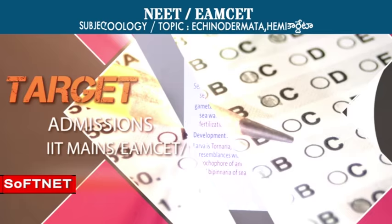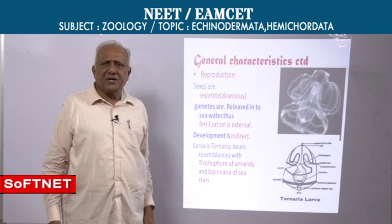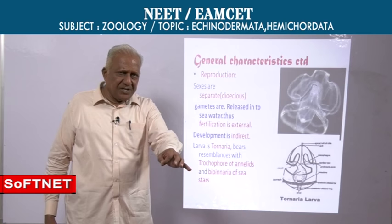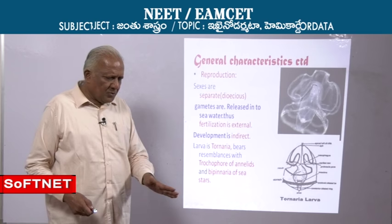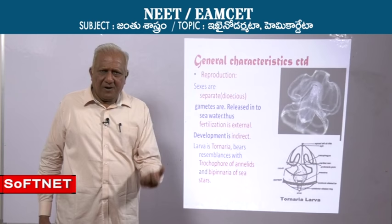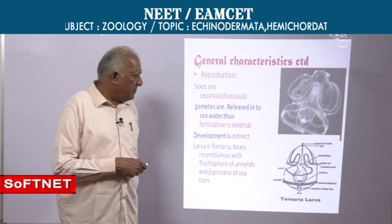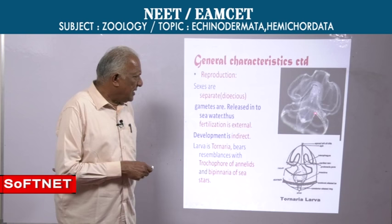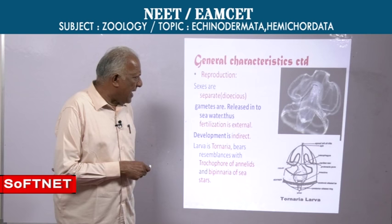Sexes are separate — dioecious. Gametes are released into sea water; both ova and sperms are shed into the sea water, so fertilization occurs in open sea water. Development is indirect, as the egg hatches into a larva. This larva is a Tornaria larva.